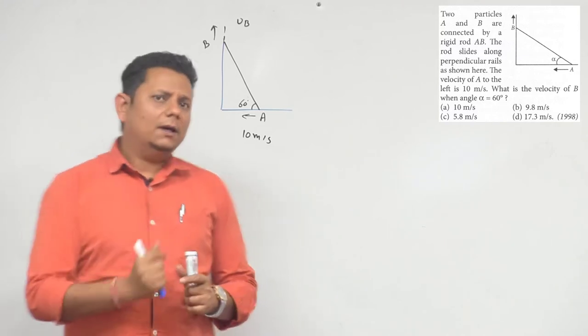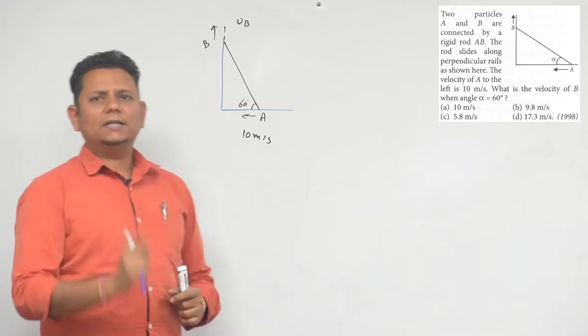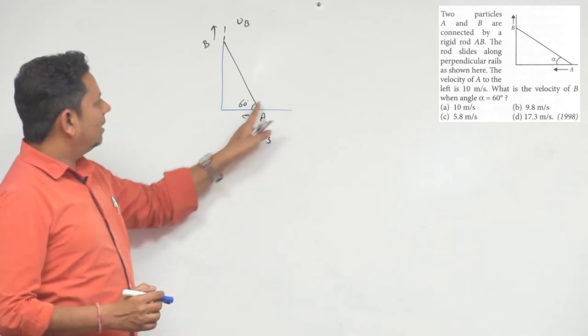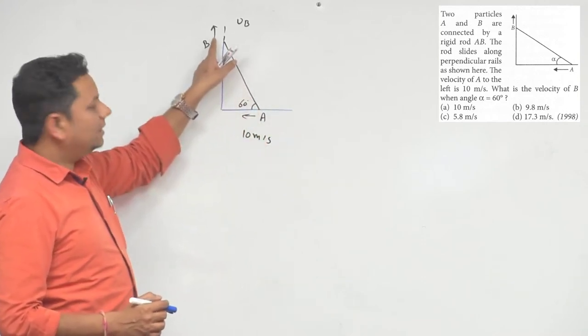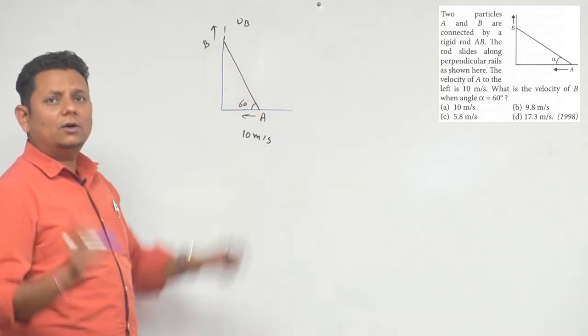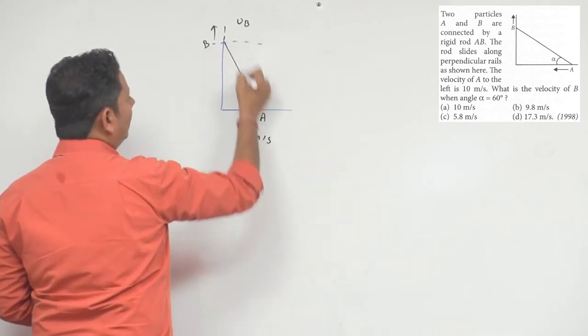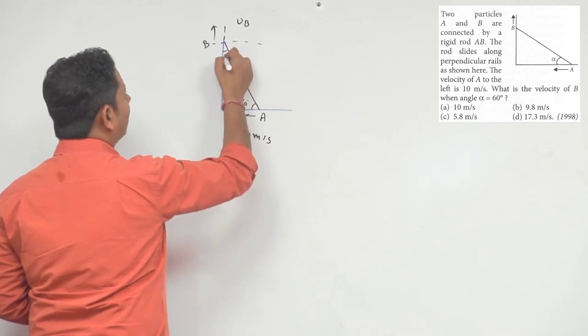Now, what that means is if we take this angle 60 degrees, this angle is 60 degrees, this angle is 30 degrees.